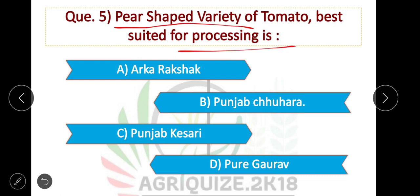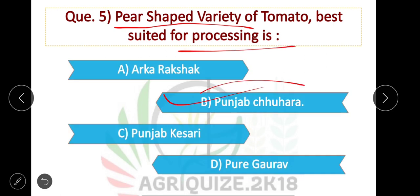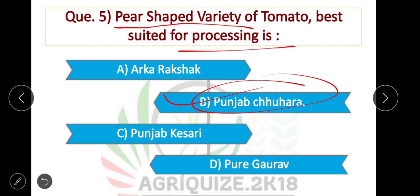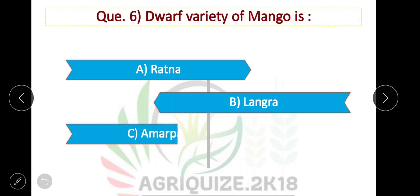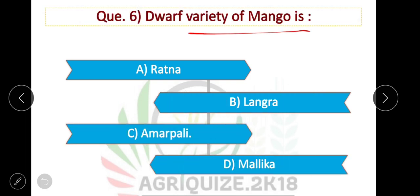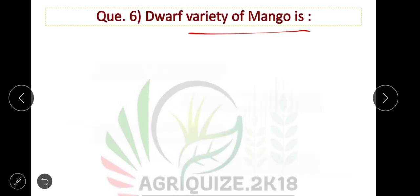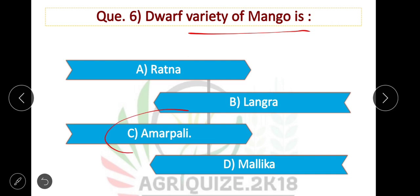Pusa Chuhara is a pear-shaped variety of tomato best suited for processing. Question number 6: The dwarf variety of mango — option C is correct. Amrapali is a dwarf variety of mango used for high-density planting.